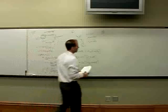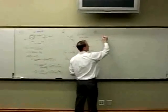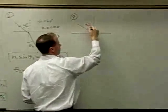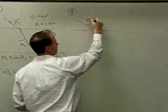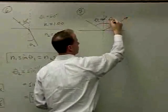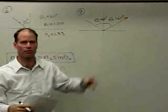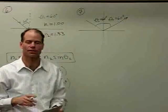Problem number seven. A light ray is incident on the surface of water, index of refraction 1.33, at an angle of 60 degrees relative to the normal. The angle of the reflected wave — for reflection, the angle of incidence equals the angle of reflection, so if the incident angle is 60 degrees, the reflected angle is also 60 degrees. Our answer is D, 60 degrees.